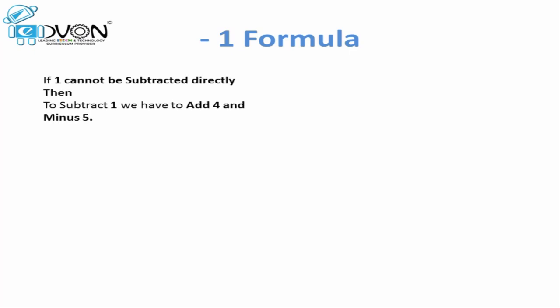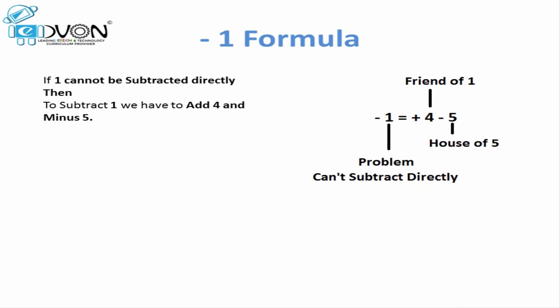When we are doing a calculation and a situation arises where we cannot directly subtract 1, to subtract 1 indirectly we add 4 and minus 5. The minus 1 formula is: minus 1 equals plus 4 minus 5. In this formula, minus 1 is our problem. Plus 4 is the friend of 1, and minus 5 is the house of 5. 1 and 4 are friends because when we add them together they result in 5.